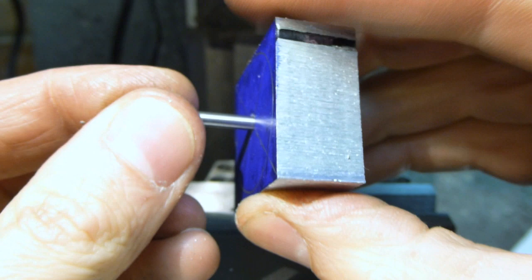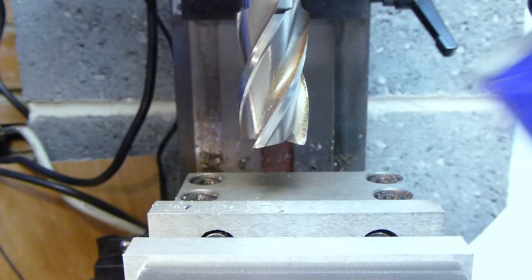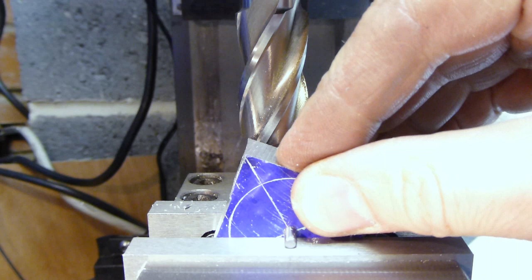Using a scrap of three millimeter silver steel as an axle, I roughly indexed the work by hand to take off the bulk of the excess material.